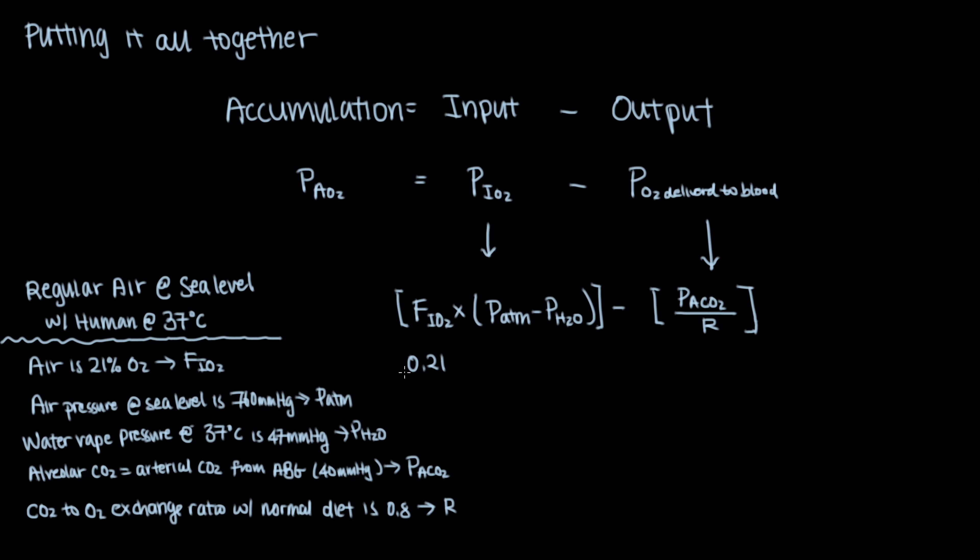Now, putting all of this together in a typical healthy young individual breathing air at sea level, we would expect to see that the alveolar oxygen pressure would be roughly 100 mmHg.